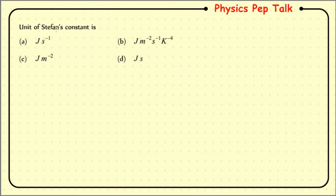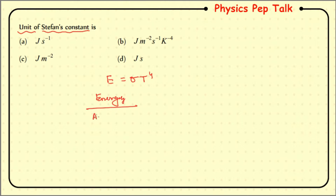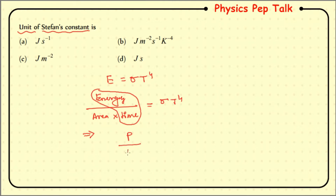Let us look into the next question: the unit of Stefan's constant. We know from Stefan's law that energy radiated E = σT⁴, where E is energy radiated per unit area per unit time. This gives us E divided by area into time = σT⁴. So sigma equals power divided by area times T to the power of 4.